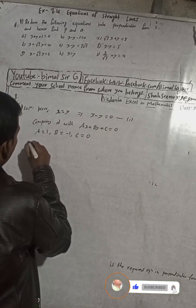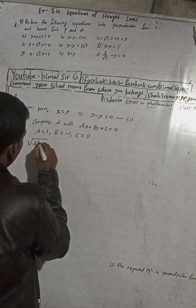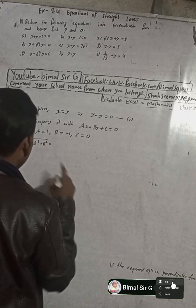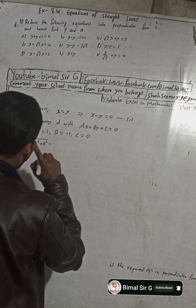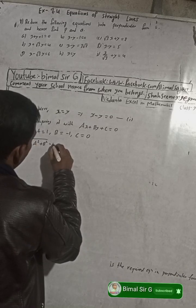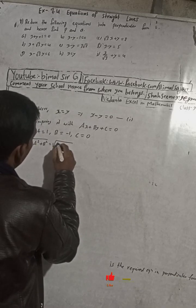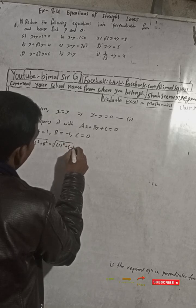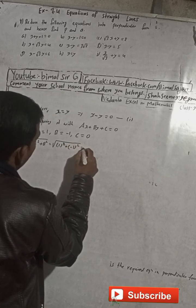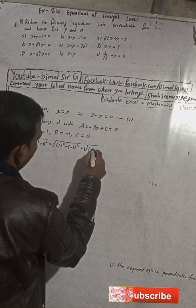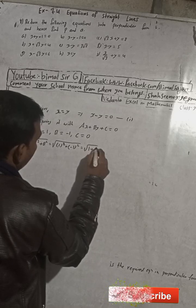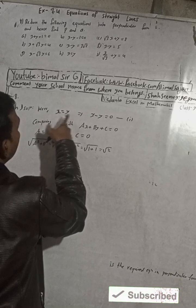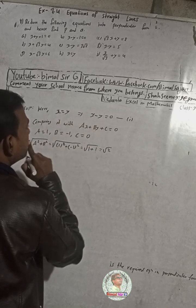Now we compute root under a² plus b². That means: 1² plus (−1)² equals 1 plus 1, so this is equal to root 2.